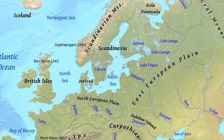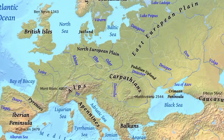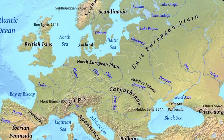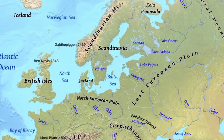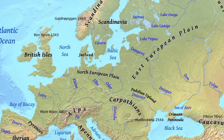This is the Ural River, the Volga River, and the Caspian Sea. The Ural Mountains mark the boundary — the left side is Europe and the right side is Asia.